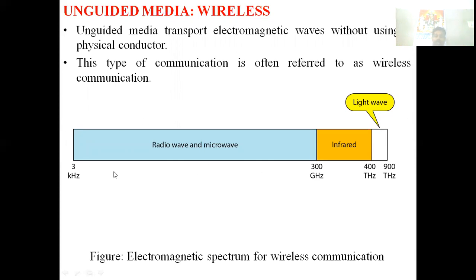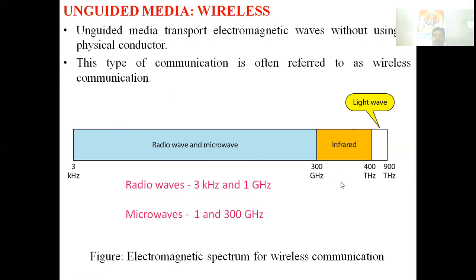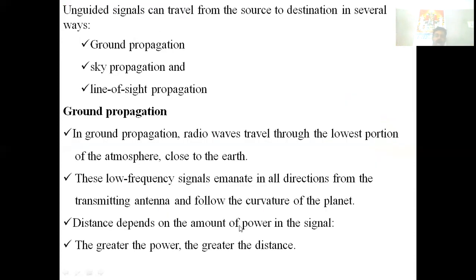The electromagnetic spectrum from 3 kHz to 300 GHz covers radio wave and microwave communication, while 300 GHz to 400 THz covers infrared. Specifically, radio waves range from 3 kHz to 1 GHz and microwaves from 1 GHz to 300 GHz.